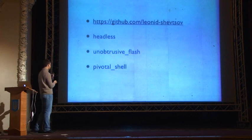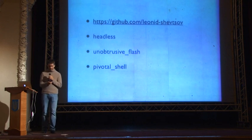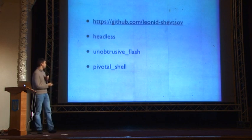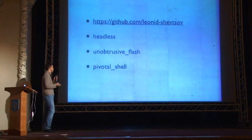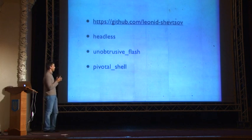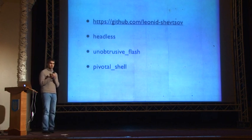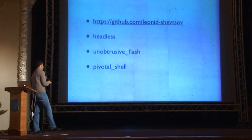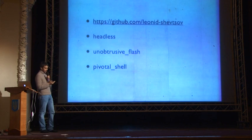I've made some gems. Headless is the wrapper for the virtual frame buffer in Ruby, which is used for acceptance testing. Obtrusive Flash is a tool that passes flash messages through your cookies, so you can use it with Ajax requests transparently. Pivotal Shell is a command line client for Pivotal Tracker.